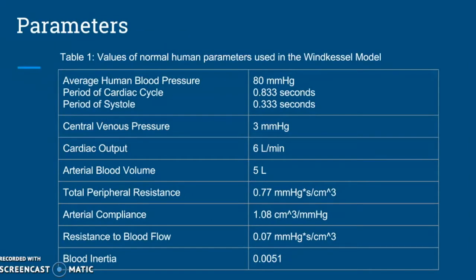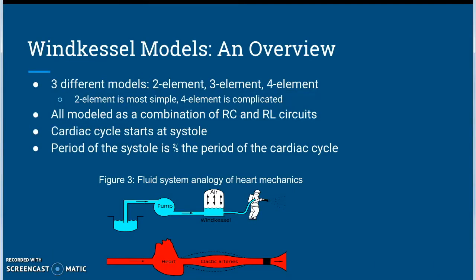Table one displays the values of normal human parameters used in the windkessel model. The total peripheral resistance is calculated using average human blood pressure, central venous pressure, and cardiac output. The arterial compliance is calculated using the change in blood flow volume over the change in pressure. The calculations for these parameters are shown in the next two slides. The resistance to blood flow and blood inertia is only taken into account for the three and four element models and was found in existing literature.